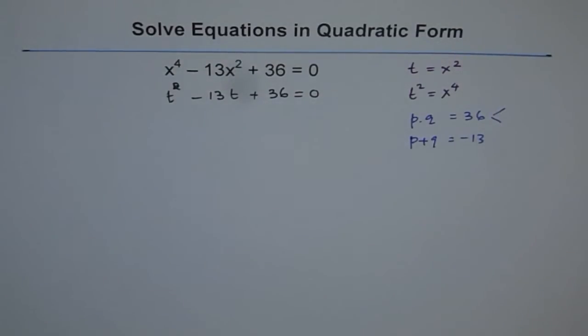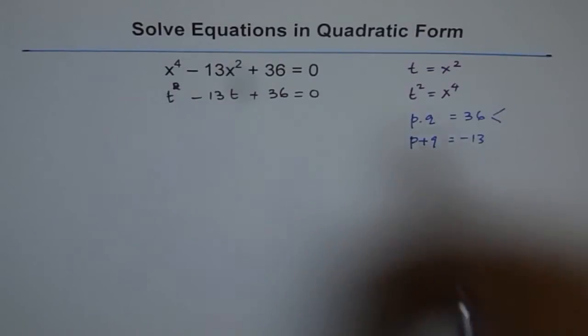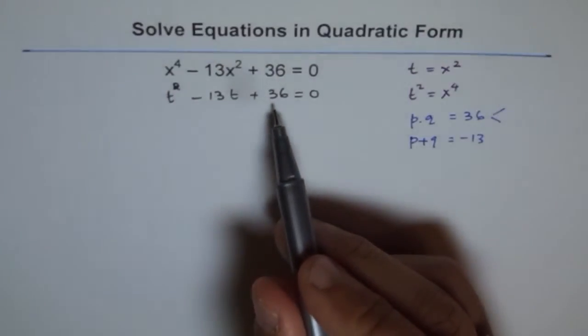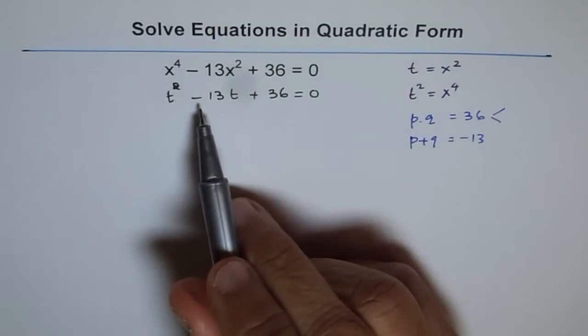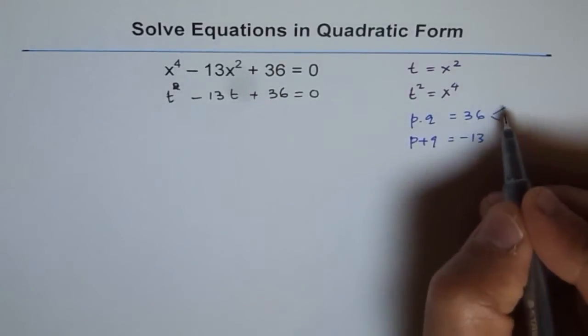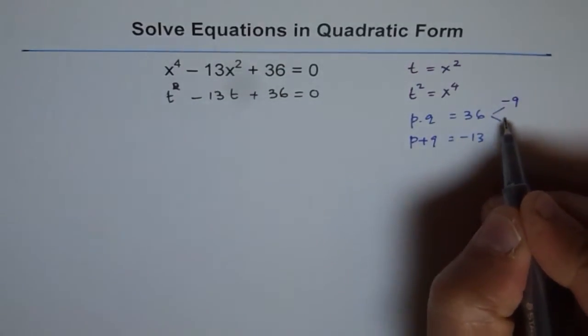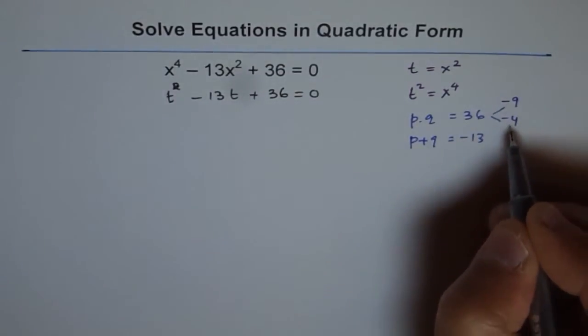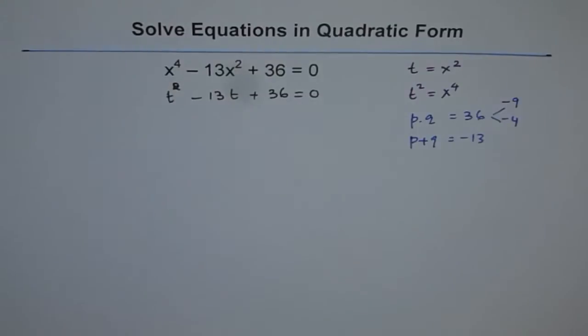So we can try a few numbers and see. We know 4 times 9 is 36. Perfect. And since we need minus 13 as their sum, the two numbers should be minus 9 and minus 4. When you add them you get minus 13. So that works.